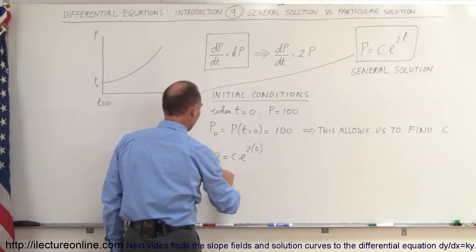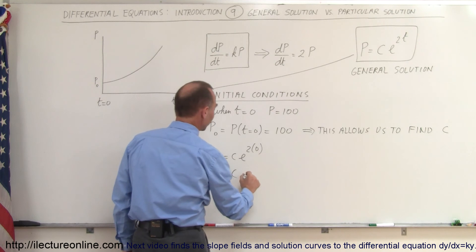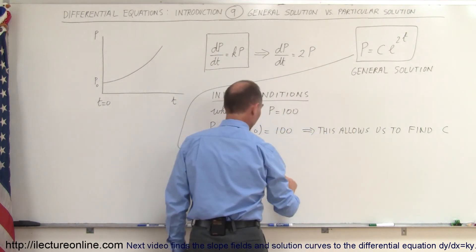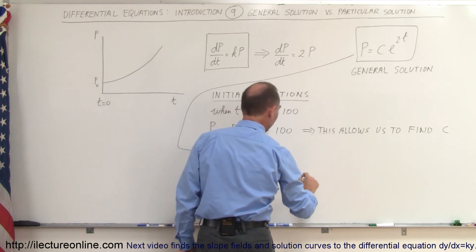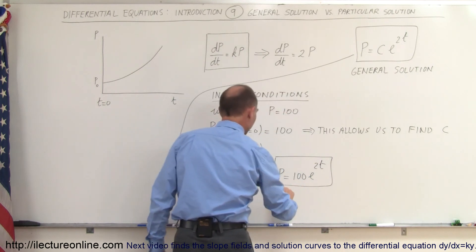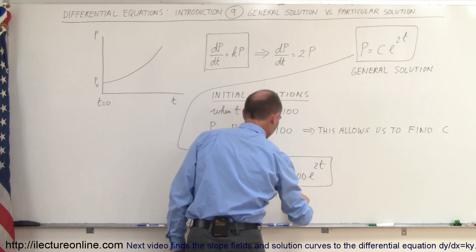That means 100 is equal to c, and so therefore we can now rewrite the equation right here, but instead of c, we write 100. So p is equal to 100 times e to the 2t, and this is now what we call the particular solution for this particular problem.